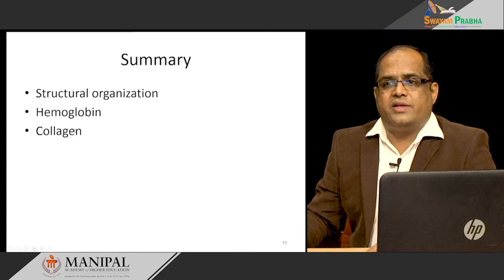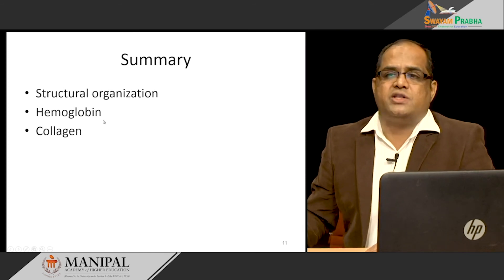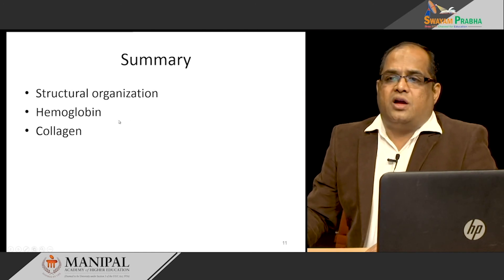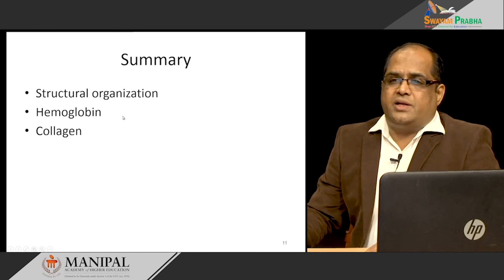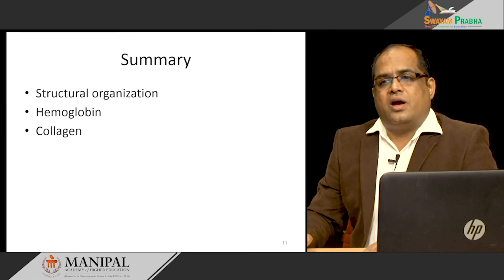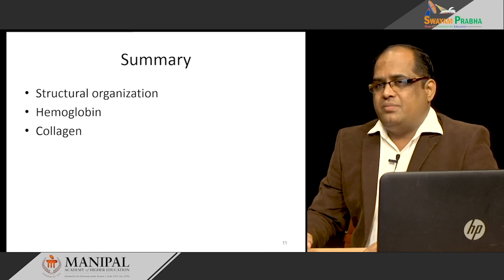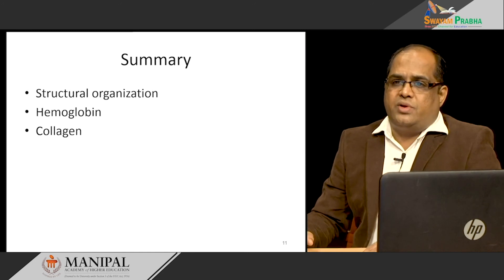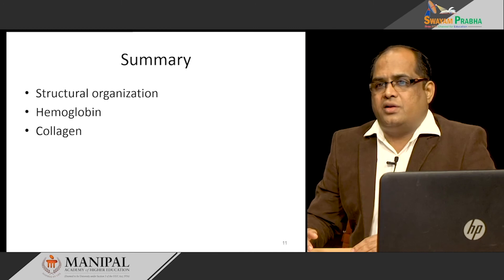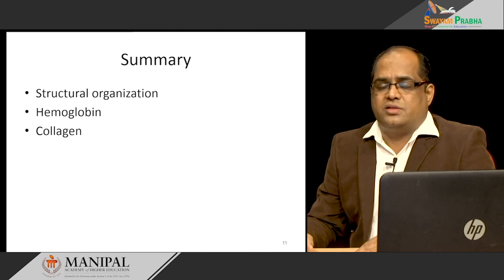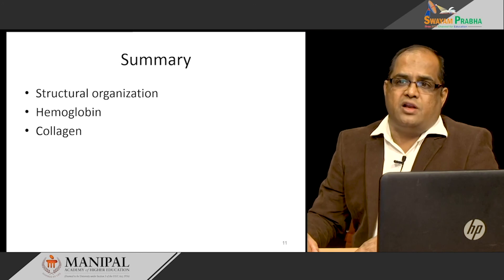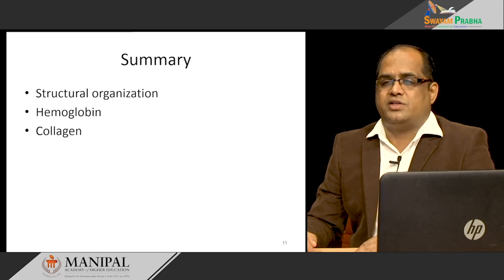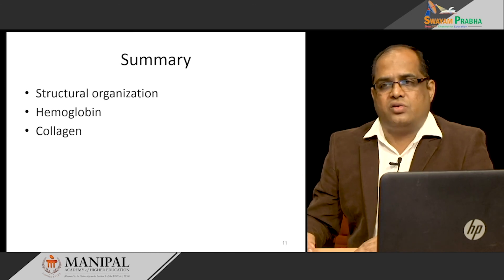We also discussed the collagen structure: it is a triple alpha helical structure of three polypeptide chains with around 1000 amino acids, the majority being glycine, proline, and lysine. Proline provides kinks or bends to the collagen chain. Glycine, the smallest amino acid, sits at the restricted places in the helix. Hydroxylation of proline and lysine forms hydrogen bonds, and cross-linking of fibrils by lysyl oxidase provides tensile strength. I hope this lecture helps you understand the different structural organizations and how they play a role in the functioning of these molecules. Thank you.